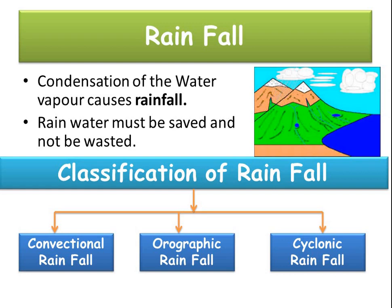Rainwater must be saved and not wasted — it is showers of blessings from the sky. In Tamil Nadu, we have a rainwater harvesting system. Every new house or building constructed, the government insists they conserve rainwater available on rooftops. The classification of rainfall is of three types: convectional rainfall, orographic rainfall and cyclonic rainfall.